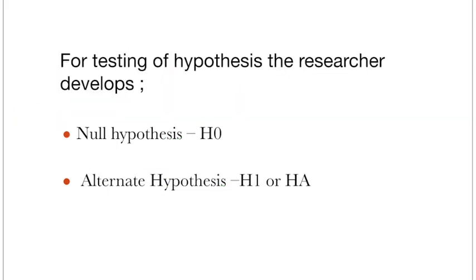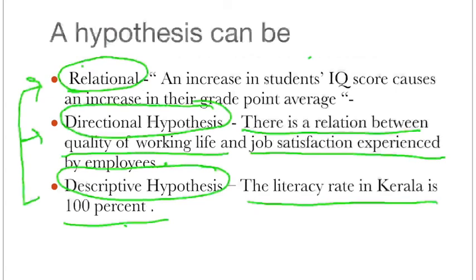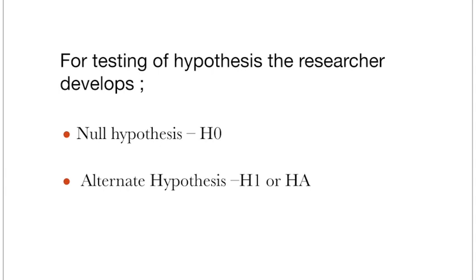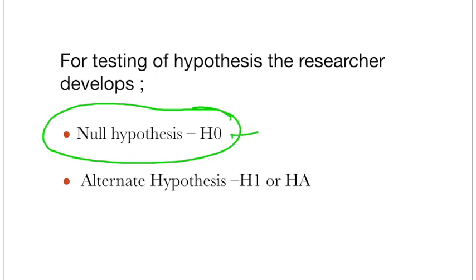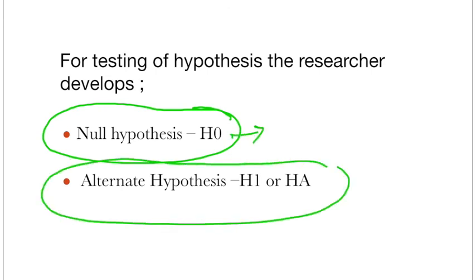Whenever we go for testing the hypothesis, before any test, we convert our hypothesis into two hypotheses: the null hypothesis, denoted by H0, and the alternate hypothesis, denoted by H1 or HA. Depending on the number of variables, we can frame multiple null hypotheses and alternate hypotheses. How to frame all these null and alternate hypotheses with case examples, I'll be telling you in my next video.